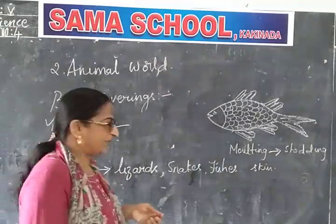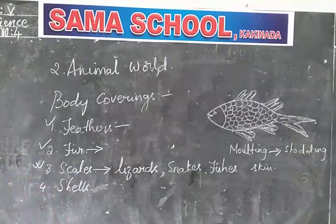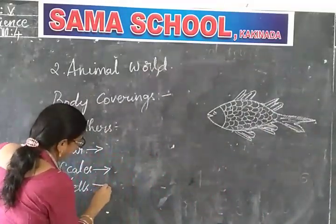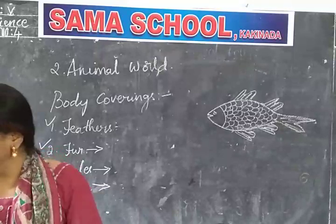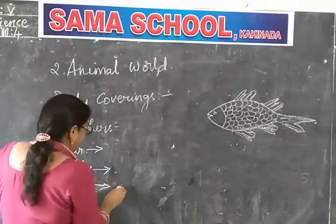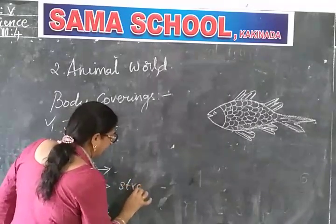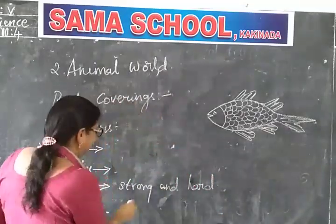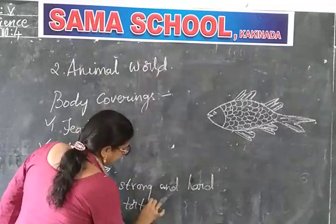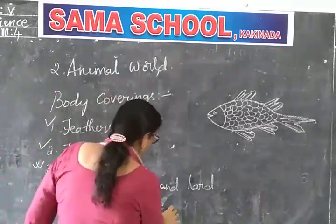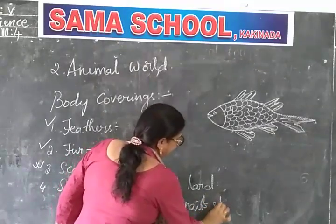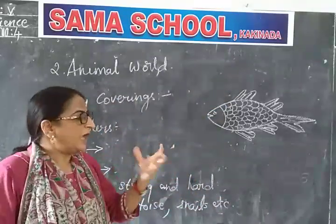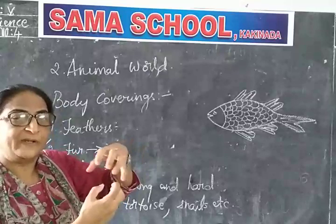We have learnt about feathers, fur, and scales — now let us learn about shells. Shells are the body coverings of animals. These shells are very strong and hard. These are the body coverings of animals like tortoise and snails. These hard shells protect the animal inside — the shell is made of calcium carbonate.